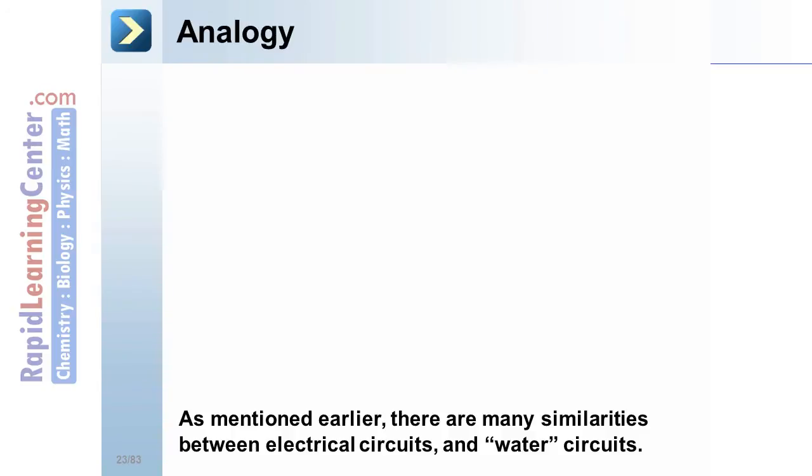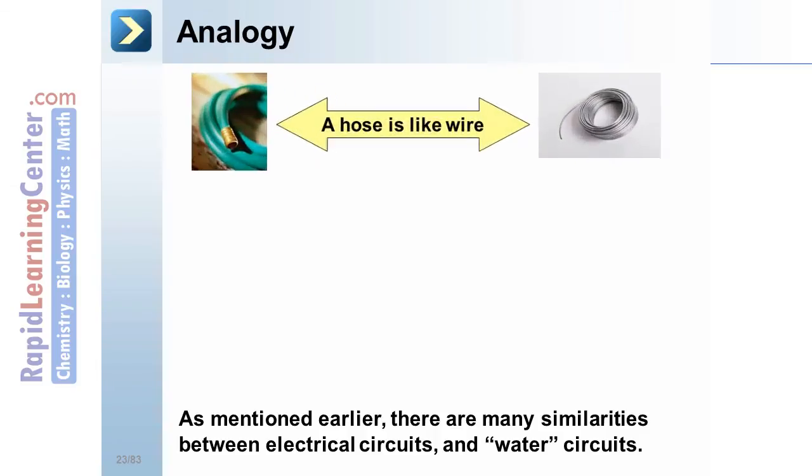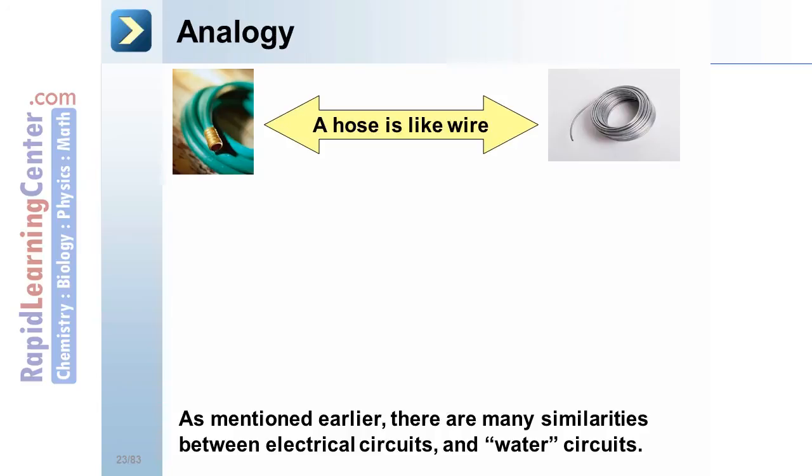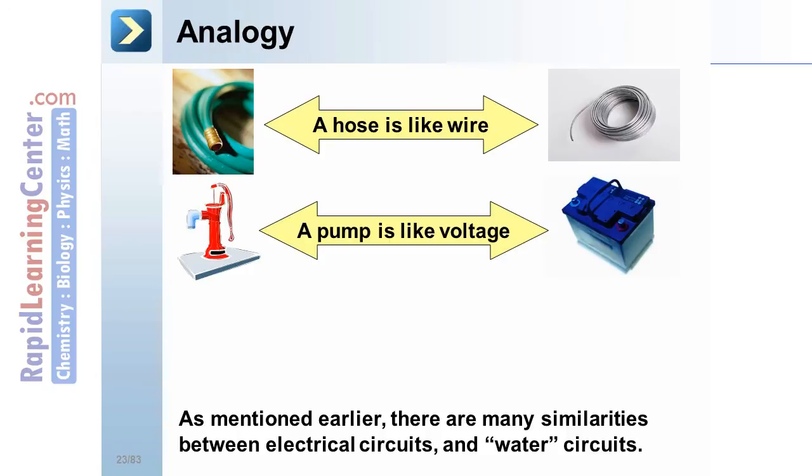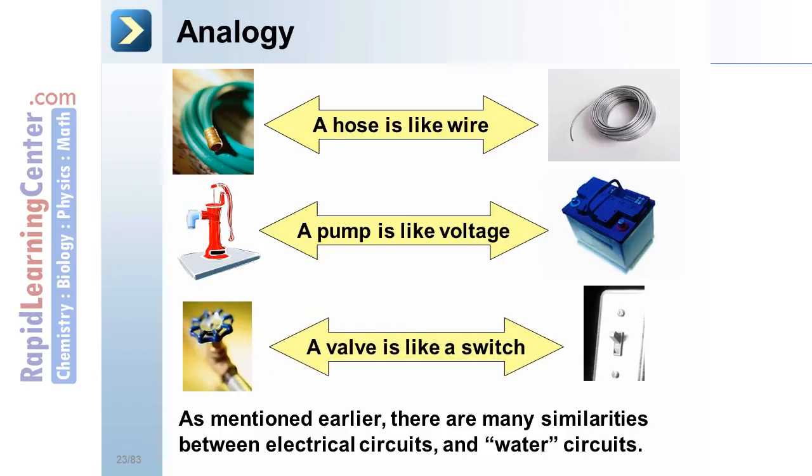Analogy. As we've already mentioned, there are many similarities between electric circuits and water circuits. Here are some similarities. A hose is like a wire, carrying water or carrying electrons. A pump is like a voltage, pushing water or pushing electrons. And a valve is like a switch, controlling the flow of water or electrons.